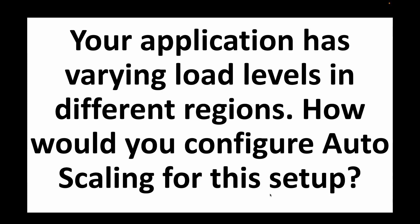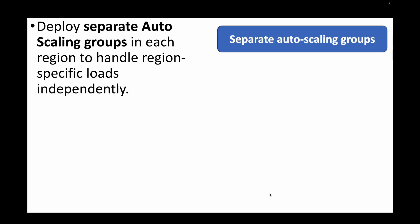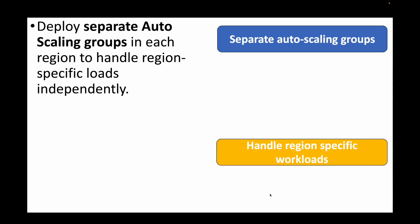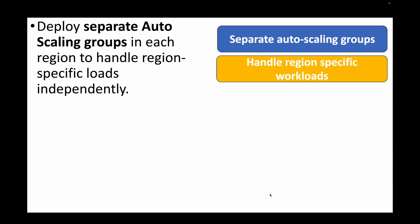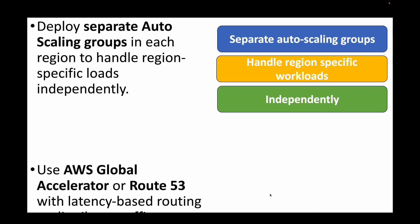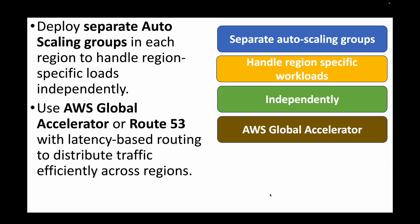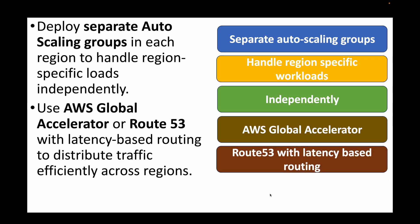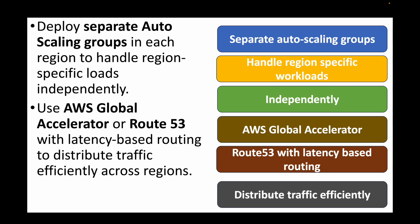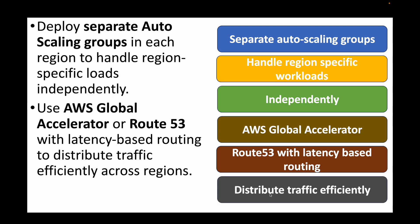The next question: your application has varying load levels in different regions — how do you configure auto scaling for this setup? For this we create separate auto scaling groups in each region to handle specific loads independently. For example, if working in North Virginia you have an auto scaling group there, and in Oregon another one. We then use AWS Global Accelerator or Route 53 with latency-based routing to distribute traffic across regions. That brings us to the end of our scenario-based interview questions for AWS load balancer and auto scaling groups.